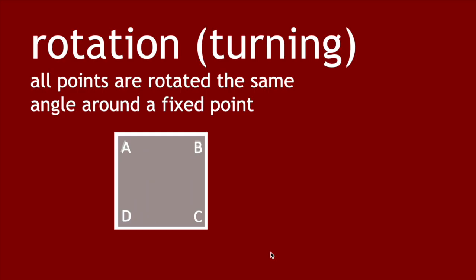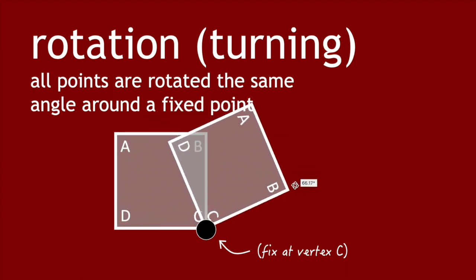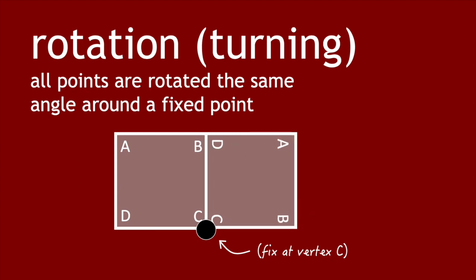Then we can have rotation, or turning. With rotation, we fix a shape at a particular point, and then the whole shape turns a given angle about that point, either clockwise or anticlockwise. With a square, since its angles are 90 degrees, we can rotate the square at any of the vertices in order to cover the plane.